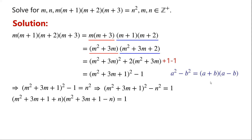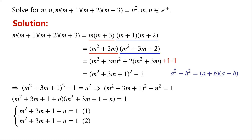We know that a squared minus b squared can be written as (a plus b) times (a minus b). By applying this, we can write: (m squared plus 3m plus 1 plus n) times (m squared plus 3m plus 1 minus n) equals 1. Since 1 is the only factor of 1, both factors must equal 1: equation 1 gives m squared plus 3m plus 1 plus n equals 1, and equation 2 gives m squared plus 3m plus 1 minus n equals 1.